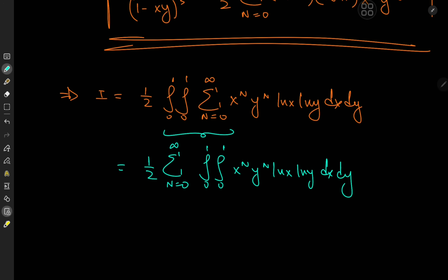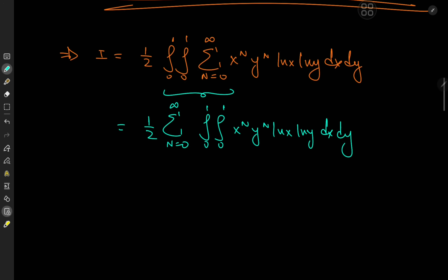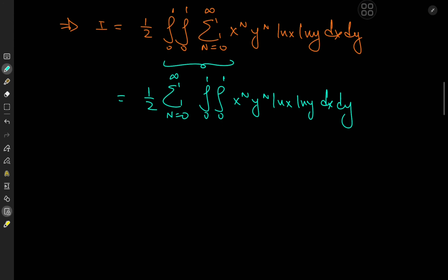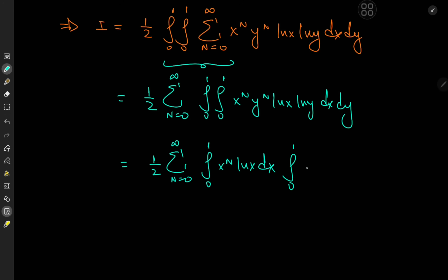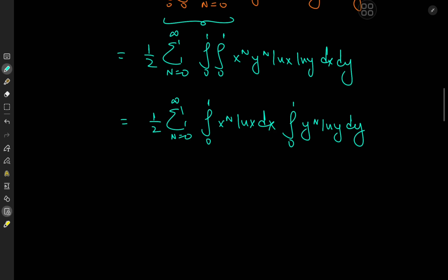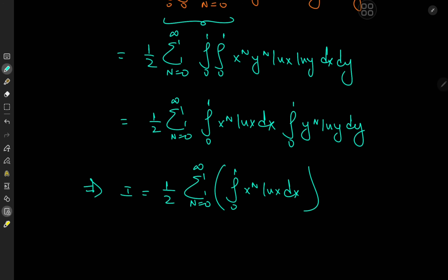That's nice because now we have a double integral of a product of functions — one being a function of x and the other a function of y. So we can write this as one half the sum over n from 0 to infinity of the integral from 0 to 1 of x to the n log x dx, times the integral from 0 to 1 of y to the n log y dy. Since the two integrals differ only in the dummy variable, they are exactly the same, so the target integral I is one half the sum over n from 0 to infinity of the integral from 0 to 1 of x to the n log x dx, whole thing squared.